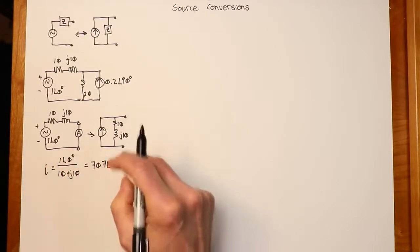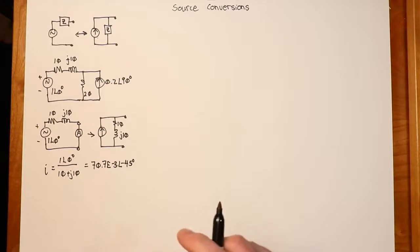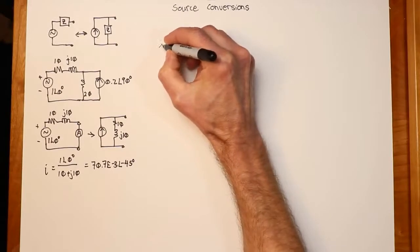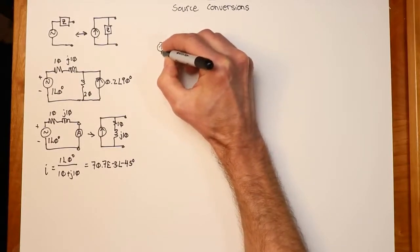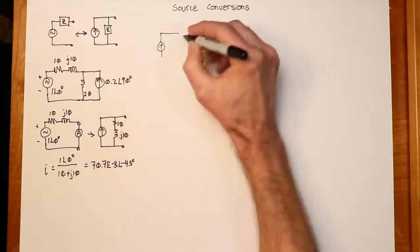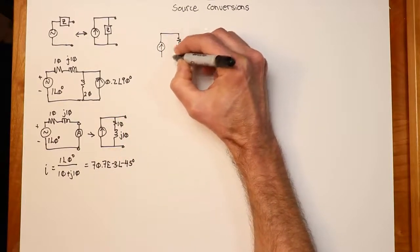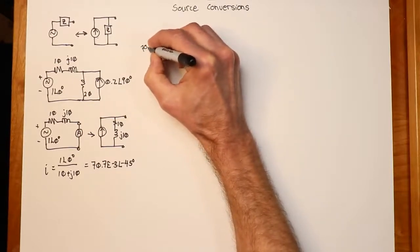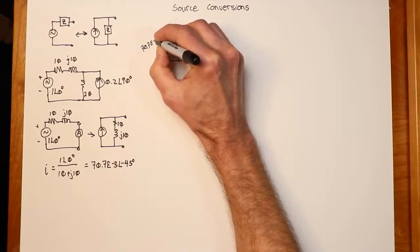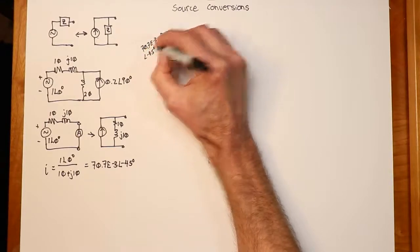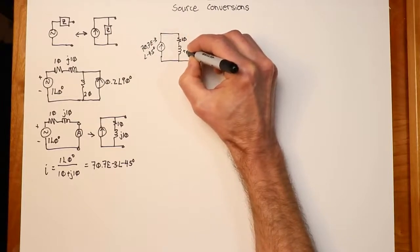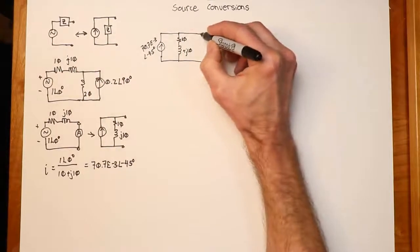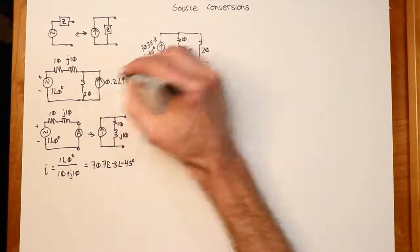So I can take this, plug it back into my original circuit, and solve. Replacing the original voltage source, we wind up with our new converted current source of 70 milliamps and the impedance of 10 plus j10. And the rest of the circuit is the 20 ohm and the other current source.